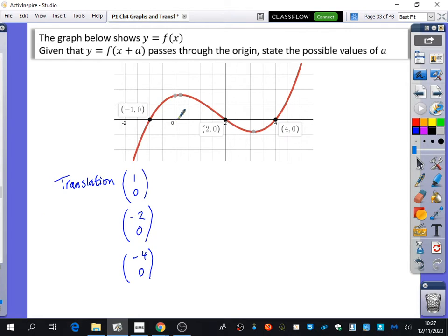So we now just need to think to ourselves, what is the value of a that produces a translation of 1, 0? Minus 1. The value of a that produces a translation of minus 2, 0 is 2. And the value of a that produces this translation is 4. So there are three values of a that would allow it to pass through the origin.